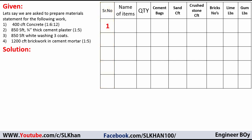At serial number one we have the item — concrete work at ratio 1:6:12 — and the quantity is 400 CFT. We're going to calculate the cement, sand, and crushed stone. There is no brick, no lime, and no gum in PCC or concrete work. These columns can be increased based on the project or activities. Now for the cement bags, we're going to do some calculation.